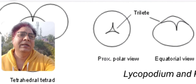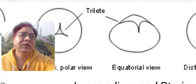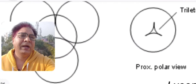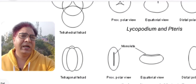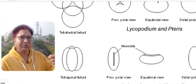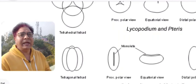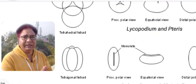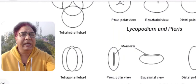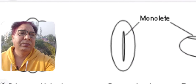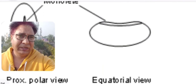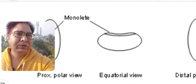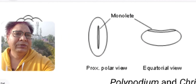In this picture, you can see the trilete polar view, the equatorial view, and the distal view of the same spore. Since there is no aperture on the distal pole, it is empty — this triradiate aperture is called the trilete aperture. If the tetrad is in tetragonal arrangement, the attachment site is almost longitudinal, producing a single furrow-like aperture — that is the monolete type. You can see in the polar view this single furrow, the equatorial views along the major and minor axes, and the distal polar view in which you do not see anything.